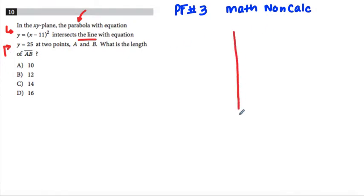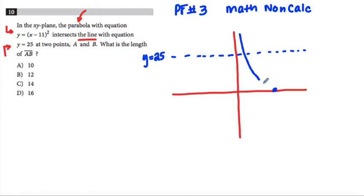So if you think about that, that is a line going through 25. It's going to have a y value of 25 no matter what the x is. Okay, so there's y equals 25. Okay, and I have a parabola that has been shifted to the right 11 units. So it's got its vertex right on the x-axis. So we've got something like this.